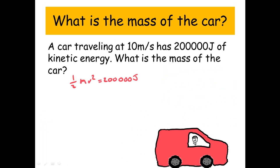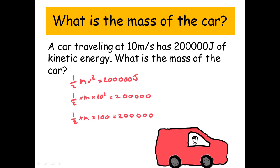We're going to use our formula, half mv squared, and that equals 200,000 joules. So a half times m times—well the velocity is 10 meters per second—so times 10 squared, and that equals 200,000. So we've got a half times m times 100 equals 200,000.